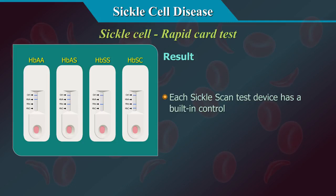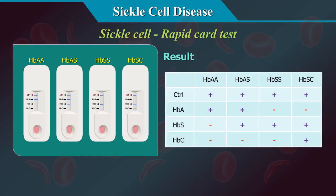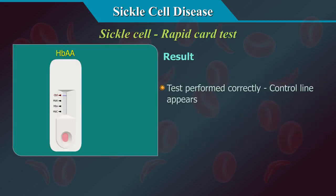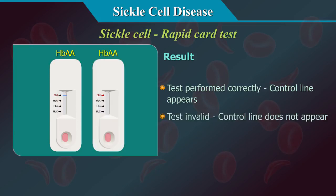Each sickle scan test device has a built-in control. A dark blue coloured line in the detection window at the control line position can be considered an internal positive procedural control. The control line will appear if the test procedure has been correctly performed. If the control line does not appear, the test is invalid and a new test must be performed. If the problem persists, please contact your local vendor.